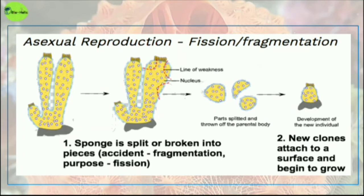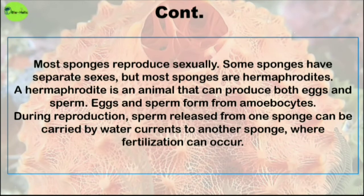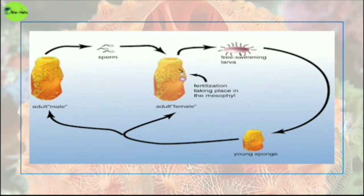Now, sexual reproduction. Most sponges reproduce sexually. Some sponges have separate sexes, but most sponges are hermaphrodites — an animal that can produce both eggs and sperm. Eggs and sperm form from the amoebocytes. During reproduction, sperm released from one sponge can be carried by water currents to another sponge where fertilization occurs.